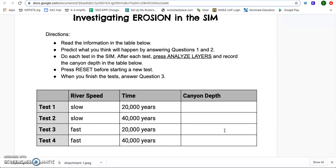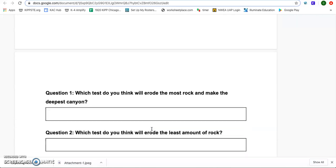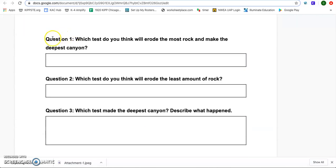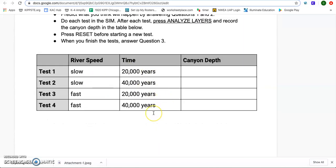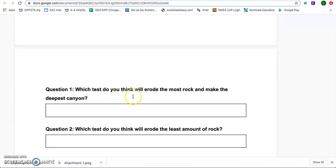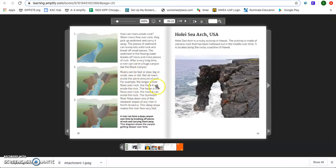Let's go ahead and move down to the classwork that you're going to do independently. You're going to investigate erosion in your sim and these are the directions that you're going to need to follow so that you can complete this table. You also have three questions here. Questions one and two are predictions. You're going to look at the table and make some predictions. Which test do you think will erode the most rock and make the deepest canyon? And which test do you think will erode the least amount of rock? In our text, this paragraph helps us answer that question and make that prediction.